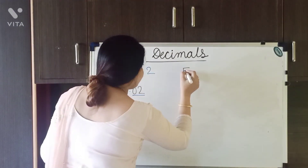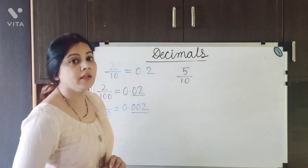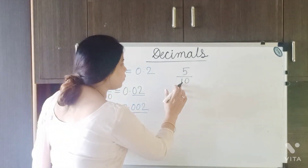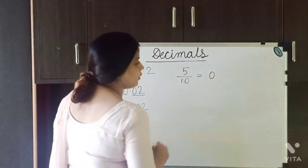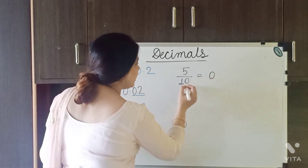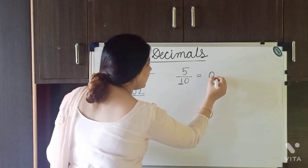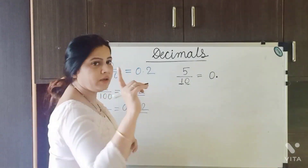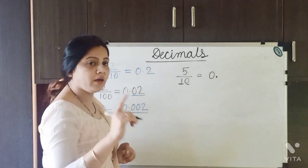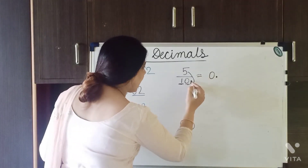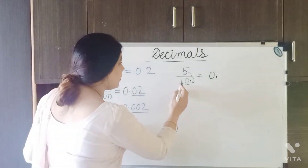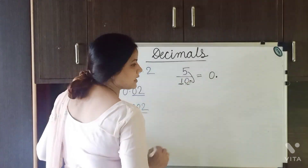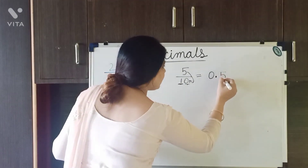Suppose it is 5 upon 10. To convert this into a decimal fraction, we convert the 1 into 0 and add a decimal point. Now, there is 1 digit remaining in the denominator and 1 digit in the numerator. So this 5 goes at the last position. It becomes 0.5.